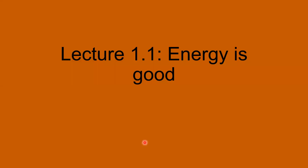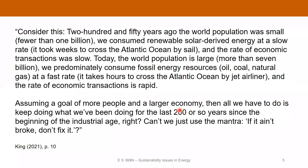Today's lecture is called Energy is Good, and I'm going to walk you through some of the basics of why energy is good, why we need it, and why we should continue to supply it to people in the future. I'll start with a quote from Cary King's book. The gist of it is that 250 years ago, we had a small world population. A lot of the energy we got was from the sun — mainly plants, food, or animals that eat plants — and economic transactions went slowly.